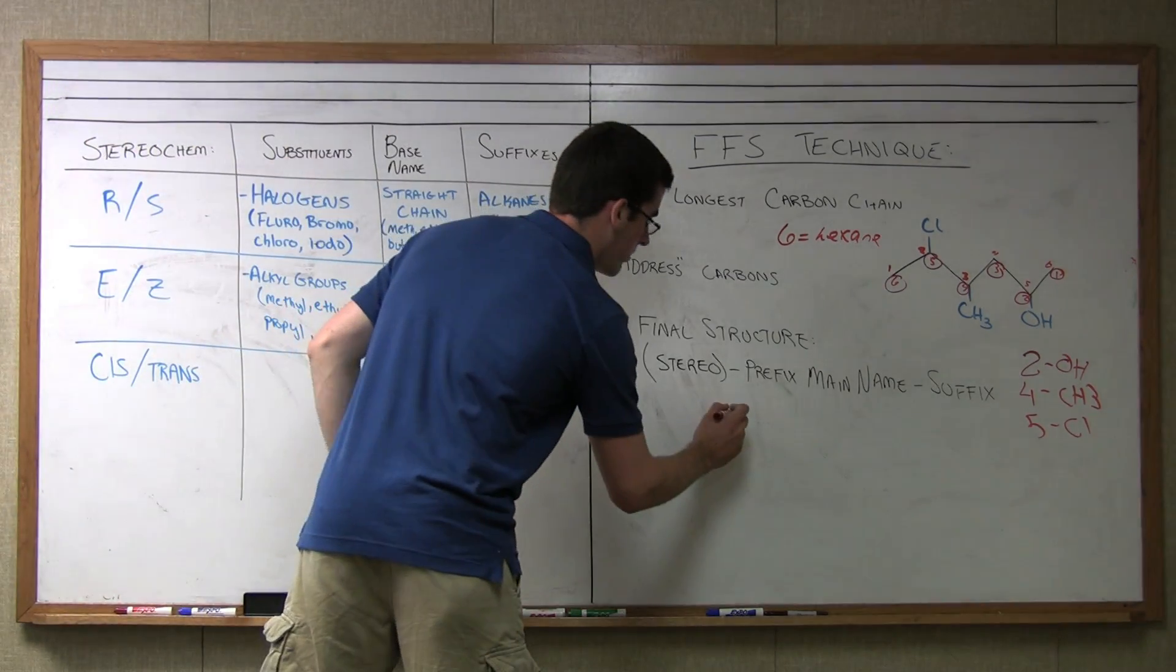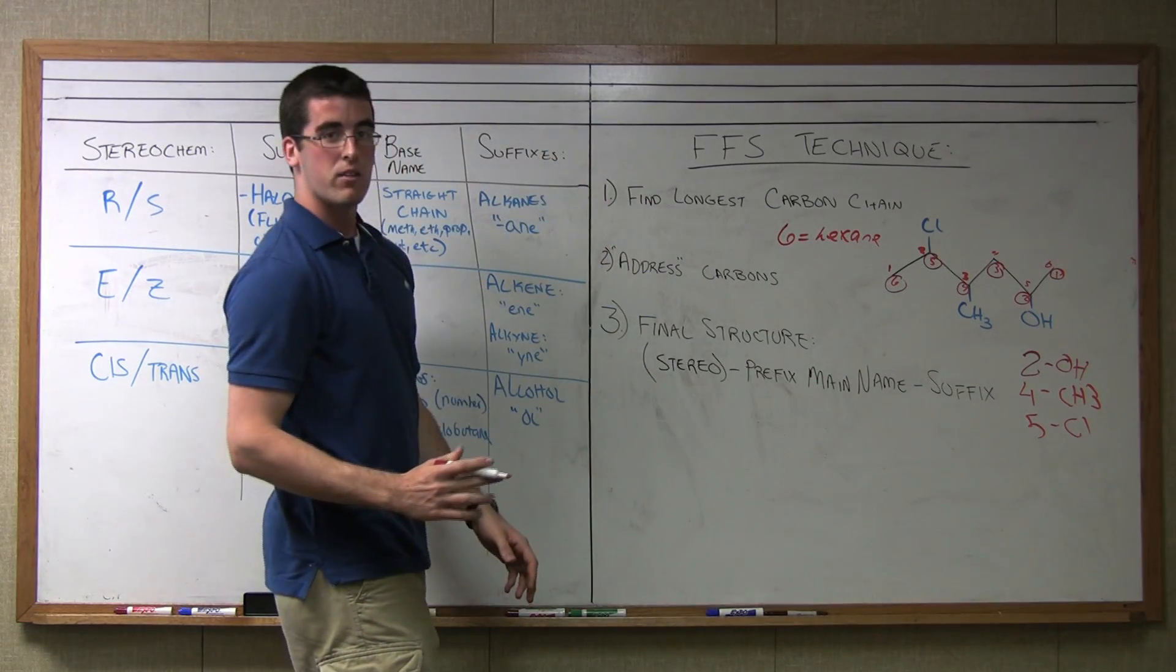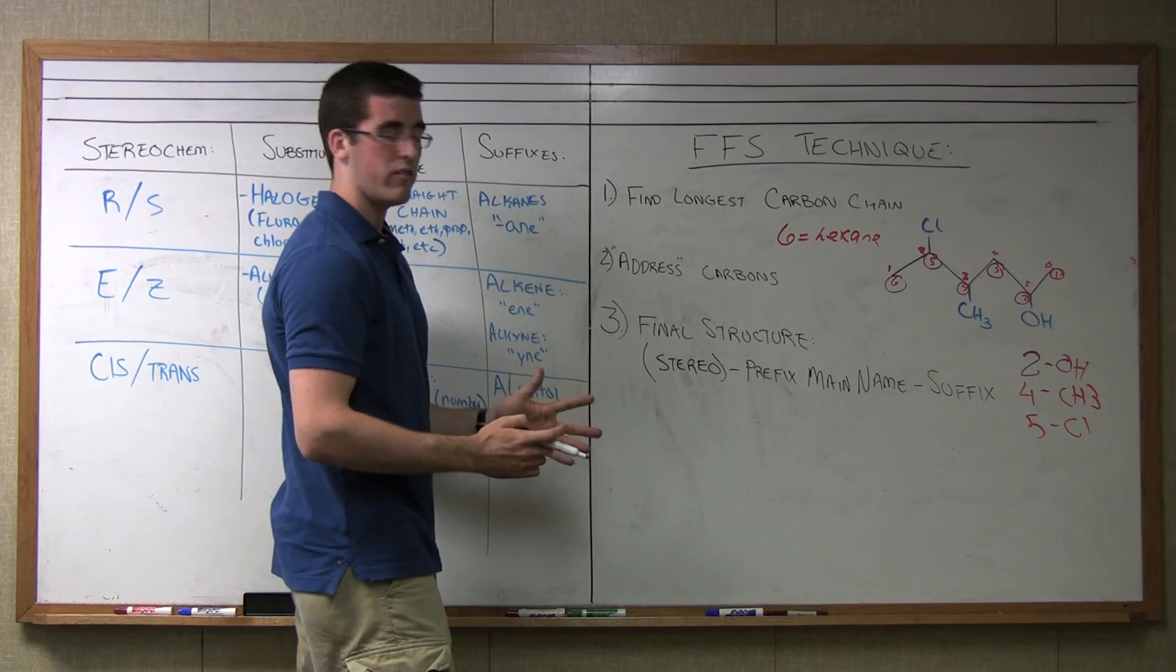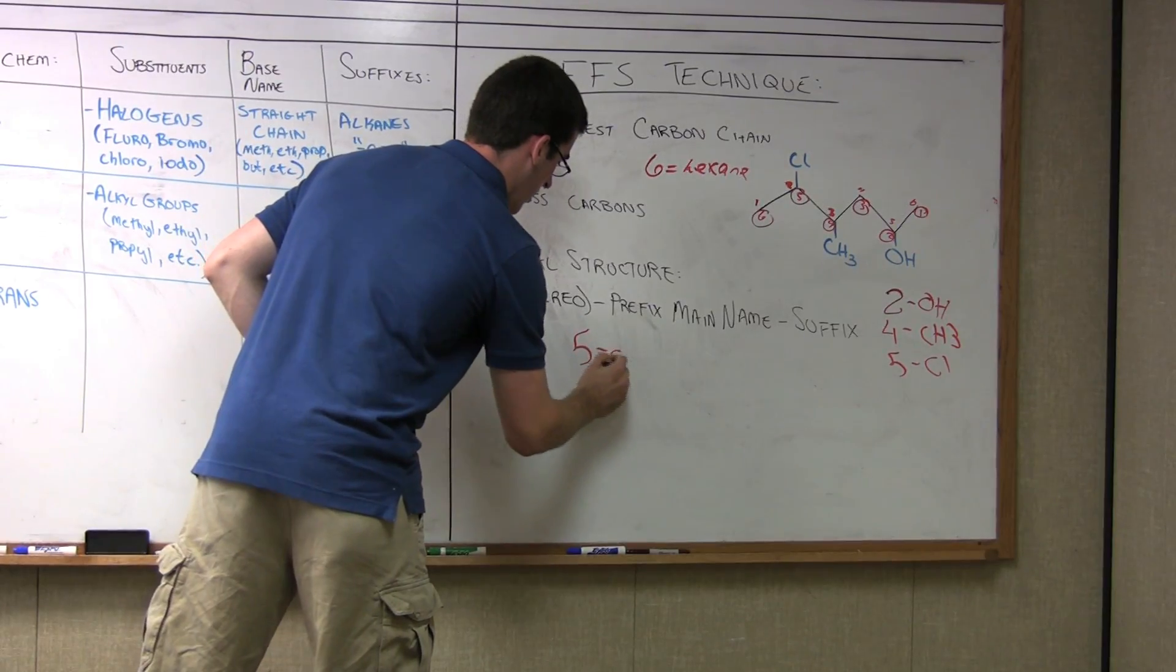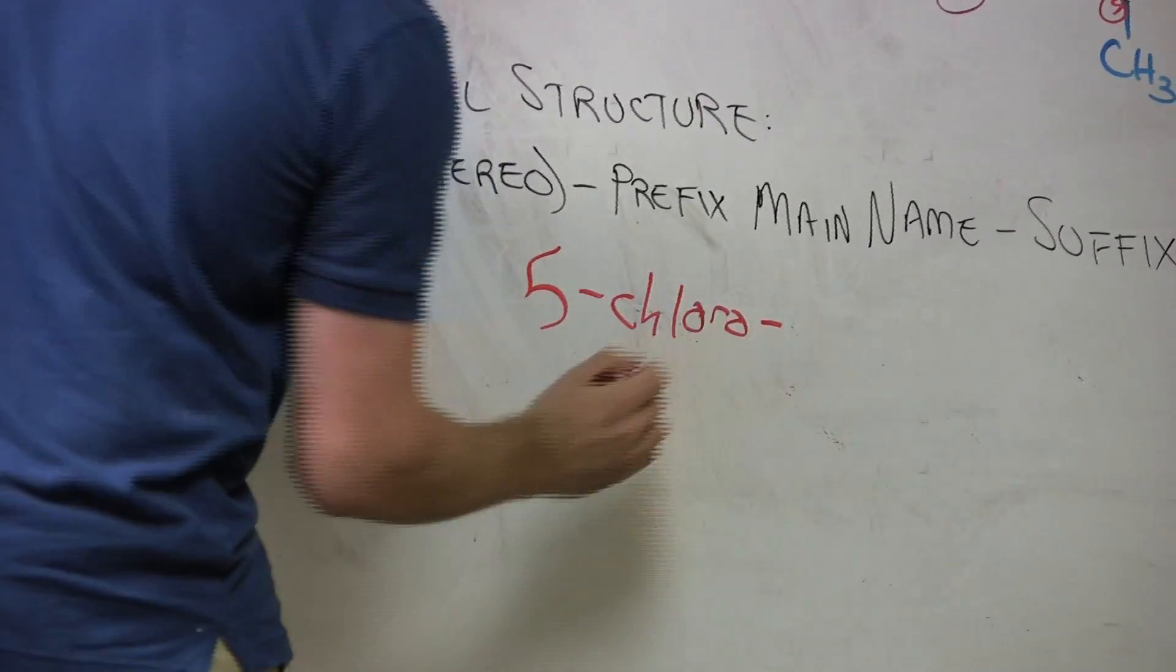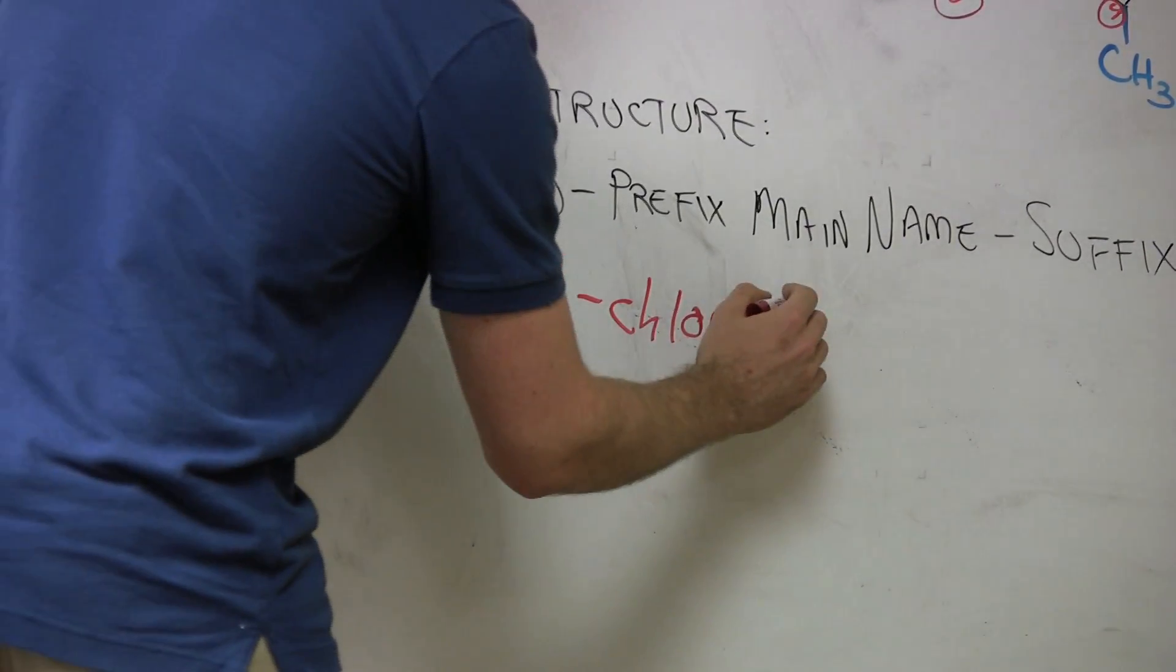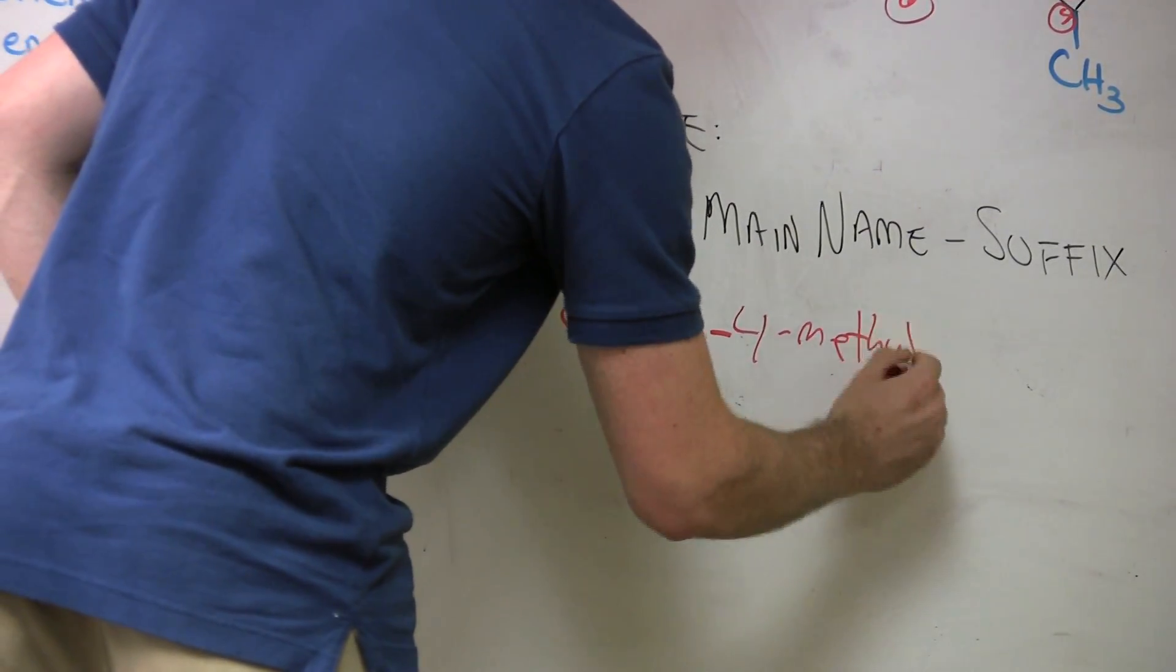We have our methyl at four and our chloro at five. The correct way to name these, because we have two prefixes, is alphabetically. So our first one is 5-chloro, and then our next prefix is 4-methyl. These are our only two prefix substituents.